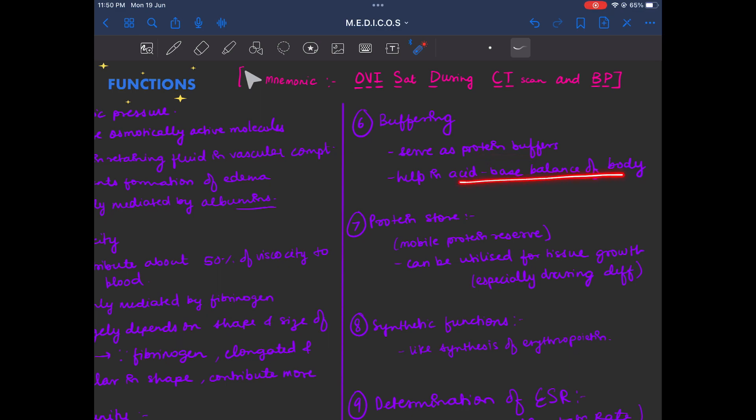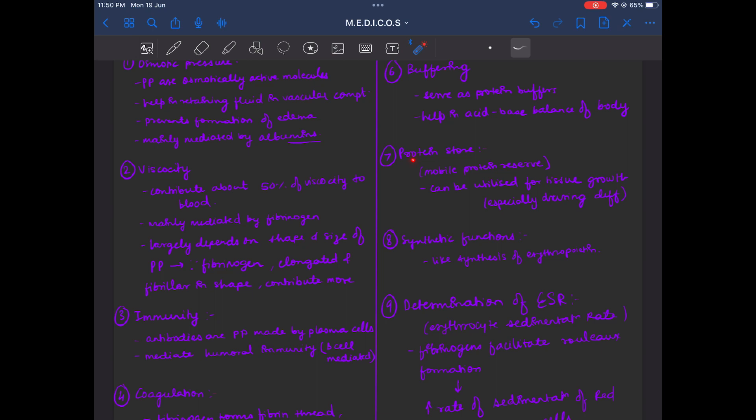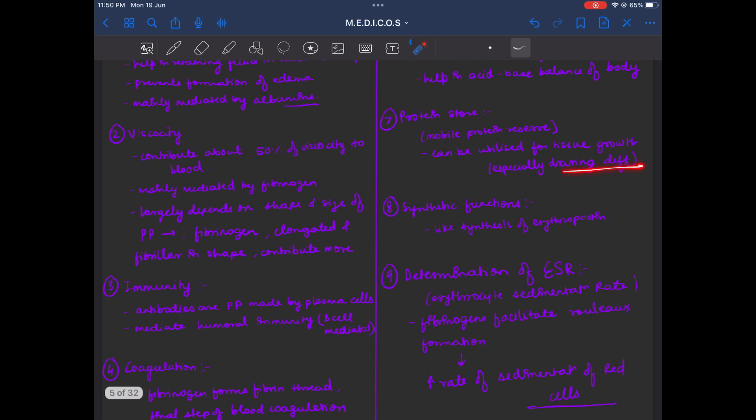Acid-base balance of the body is maintained. Next is protein stores. Basically plasma proteins are mobile protein stores. During deficiency, the plasma proteins are utilized for tissue growth.